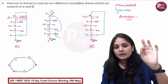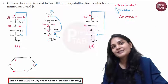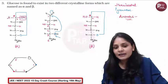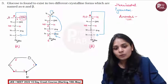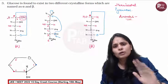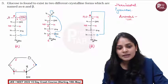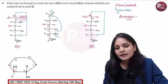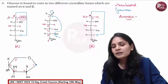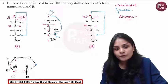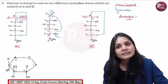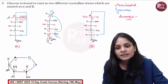Now let's draw the structure. First, second, third, fourth, fifth carbon. Second carbon is on the right side, so OH comes down. Third carbon is abnormal, so OH goes up and H goes down. Fourth carbon is normal — same way, draw it. The fifth carbon connects via oxygen to form the hemiacetal. What remains? CH2OH at the sixth carbon position.